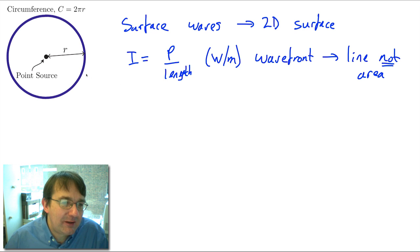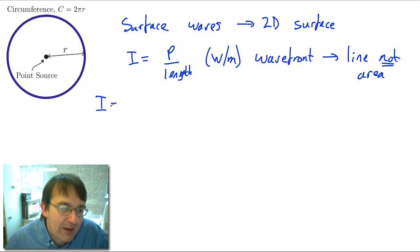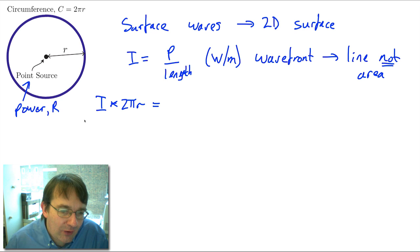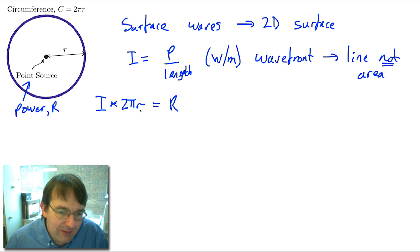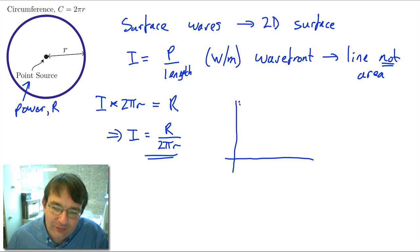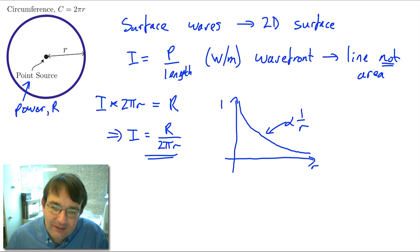Using the same argument as for the three-dimensional case: the intensity of the 2D wave multiplied by the length of the wave front, which is 2πr, must equal the total power R by conservation of energy. Therefore, intensity equals R / (2πr). For waves in two dimensions, there is still a fall-off in intensity with distance, but now the intensity is proportional to 1/r rather than 1/r².